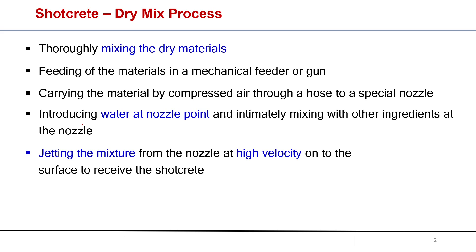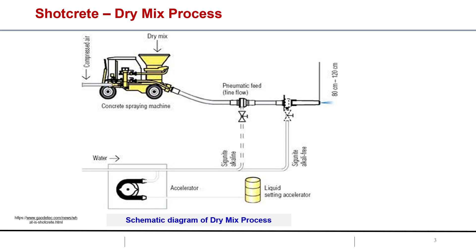First we will discuss the dry mix process. Here we will mix the dry materials first thoroughly. Here I will show side by side two slides. This is the schematic representation. You can see this is a concrete spraying machine. Here we have to pour the dry mix. Dry mix means whatever ingredients are there like cement, sand. We put this in this machine.